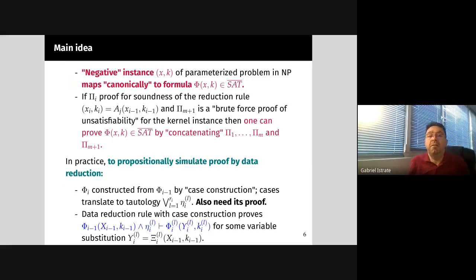The main idea of our results is actually quite simple. We're looking at a negative instance (x,k) of a parameterized problem in NP - think of all graphs and parameters k such that the graph g does not have a vertex cover of size k. You can canonically map such an instance to an unsatisfiable formula. Now consider a data reduction for the problem. If one could translate this data reduction propositionally so we can create efficient proofs of soundness of each data reduction step, then concatenating these propositional proofs with a brute force proof of the kernel gives an efficient propositional proof for the original instance.